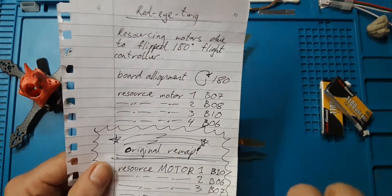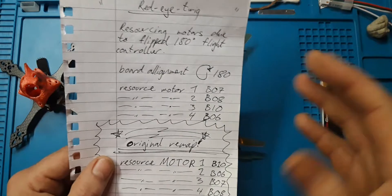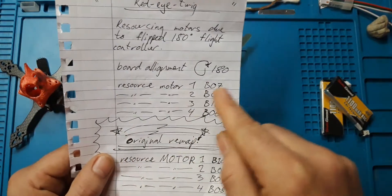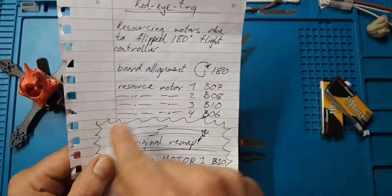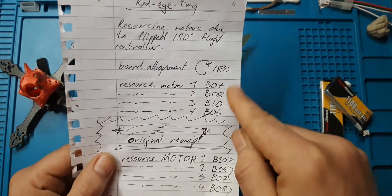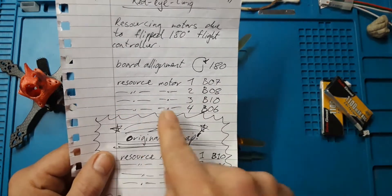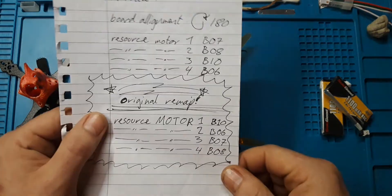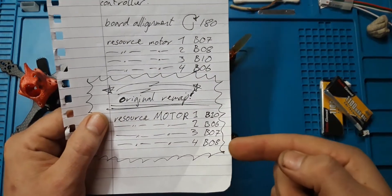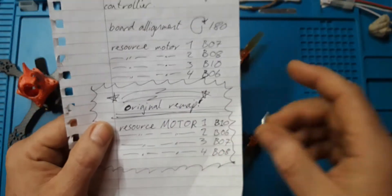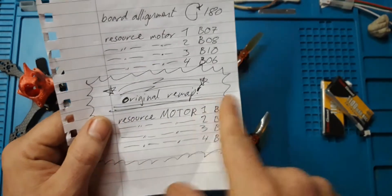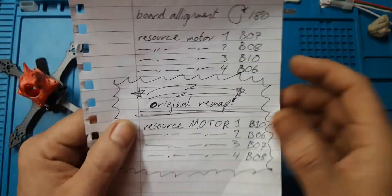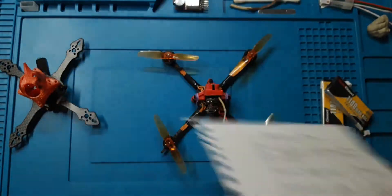So what I did was I aligned the board 180 degrees in the configuration tab. When in CLI wrote resource motor one B07, resource motor two B08, resource motor three B10, resource motor four B06. So comparing to this I think you'll probably understand because of the flip, right now. It's very important that you keep a note of your original remap if you would ever want to flip it over again.